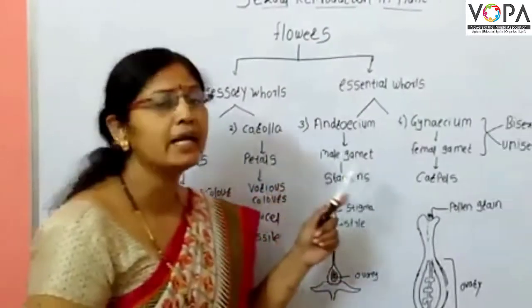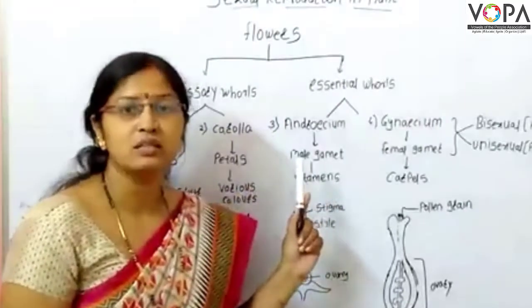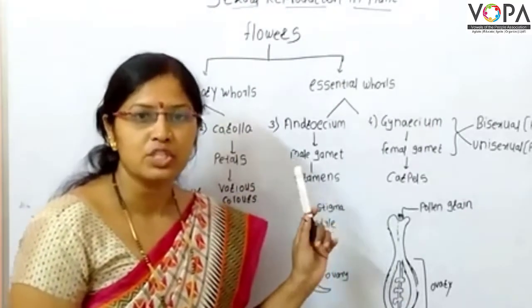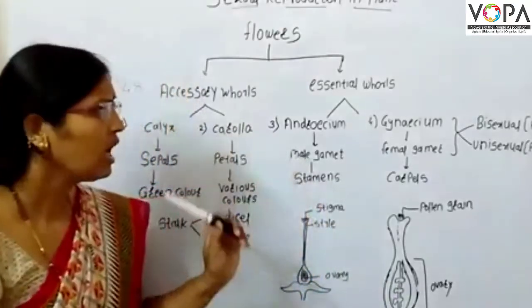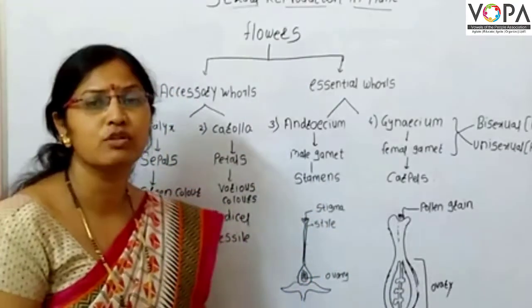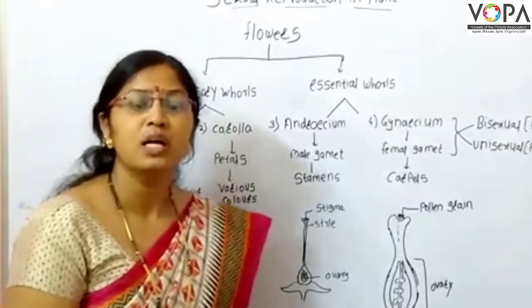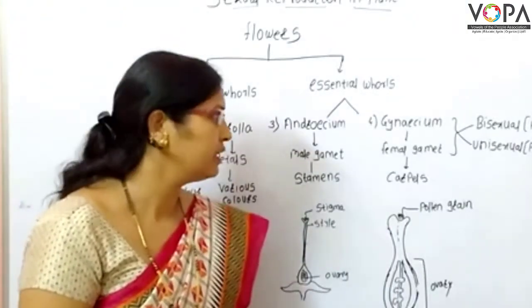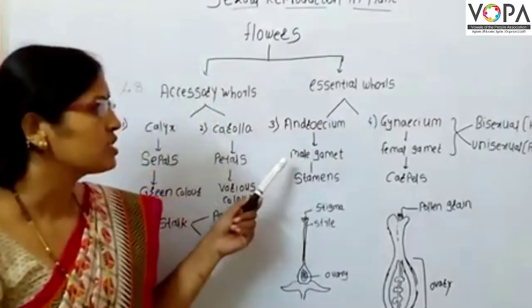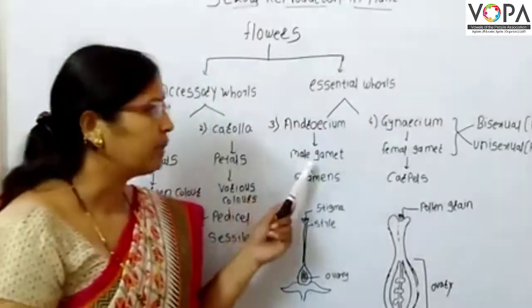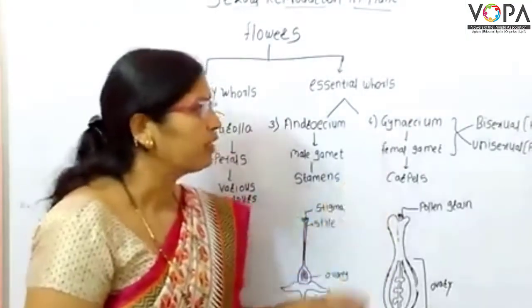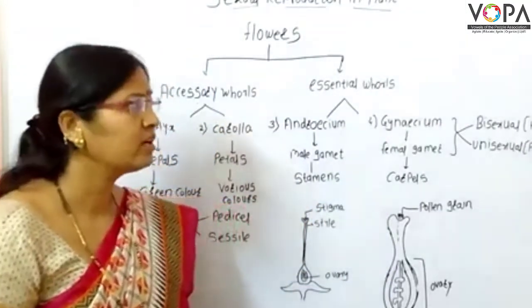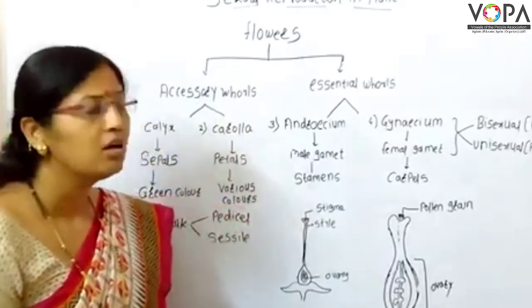Androecium and gynoecium are called the reproductive parts of the flower. Androecium consists of the male gamete and gynoecium consists of the female gamete.